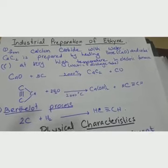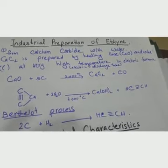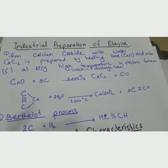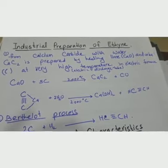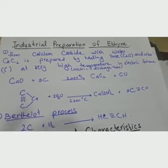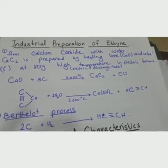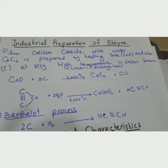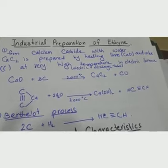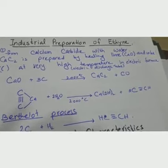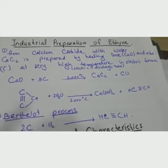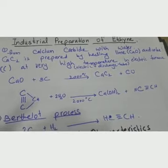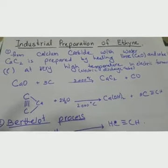Now we will look at the industrial preparation of ethyne, also called acetylene. Acetylene is a very important compound — the oxy-acetylene flame is used worldwide for welding and cutting. Therefore, ethyne gas is produced on an industrial, large scale.